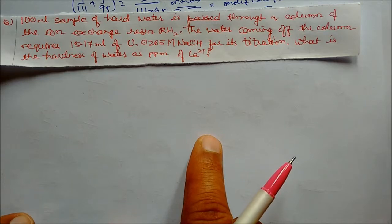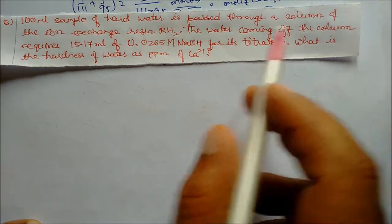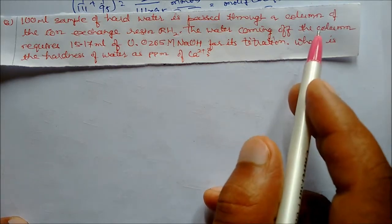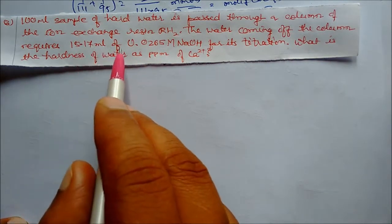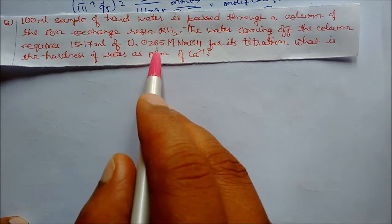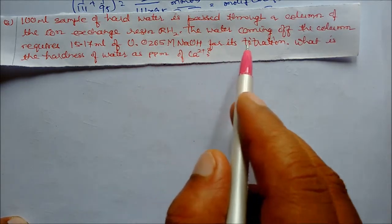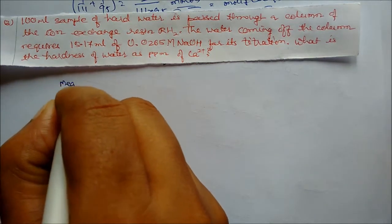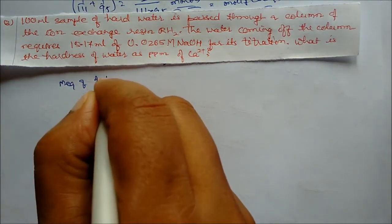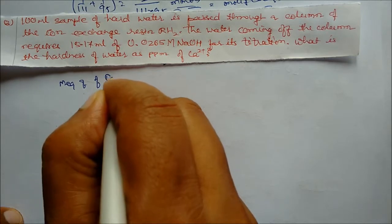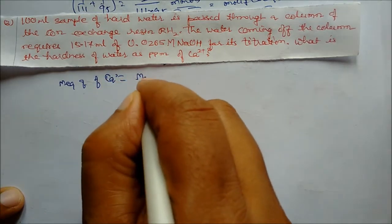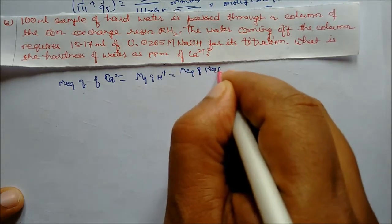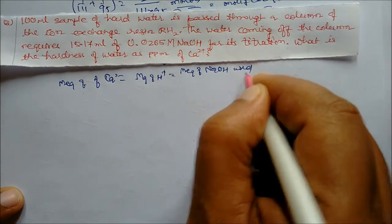Question three: a 100 mL sample of hard water is passed through a column of ion exchanger resin. The water coming off the column requires 15.17 mL of 0.0265 molar sodium hydroxide for titration. What is the hardness of the water as ppm of calcium carbonate? Millimoles of calcium = millimoles of H⁺ = millimoles of NaOH used.